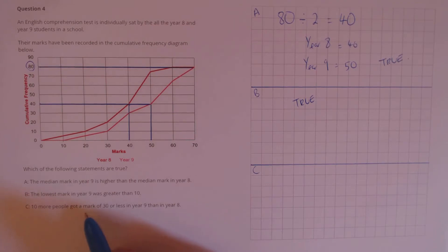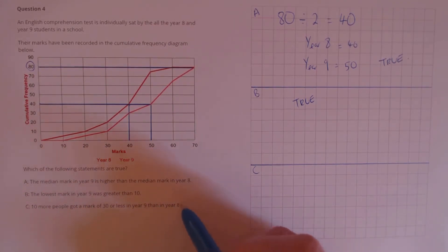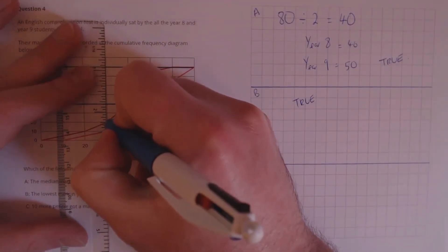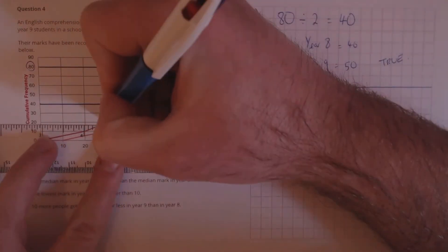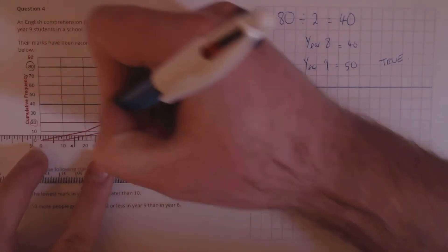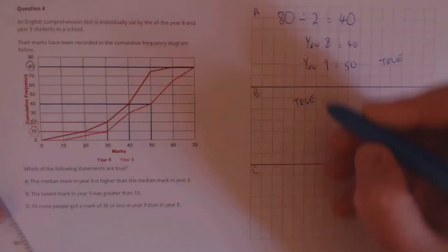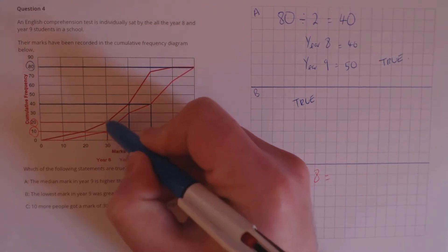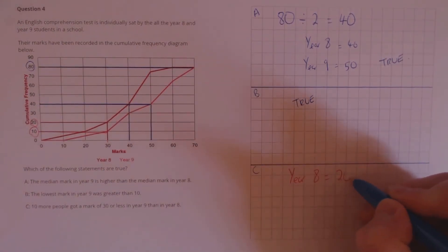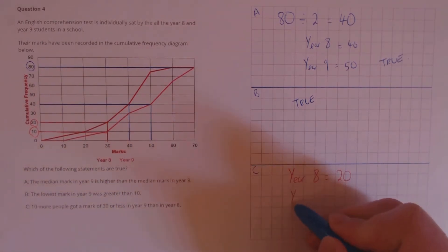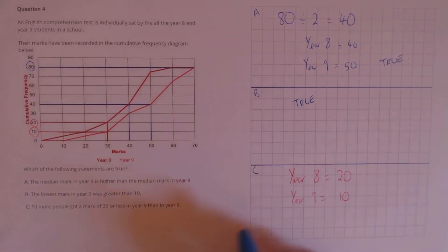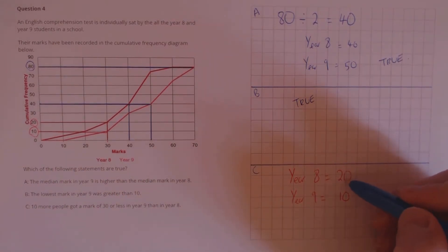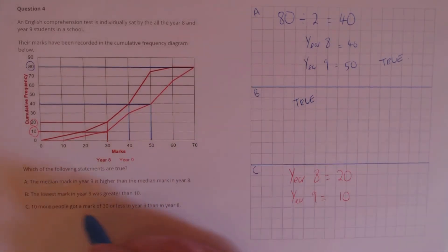Finally for C: 10 more people got a mark of 30 or less in year 9 than year 8. So let's go to the mark of 30 and draw up from there and then across to the cumulative frequency. In year 8, we go up from 30 to the curve and then across — 20 people got a mark of 30 or less. And in year 9, 10 people got a mark of 30 or less. So there were actually 10 fewer people who got a mark of 30 or less in year 9 than year 8, so this statement is false.